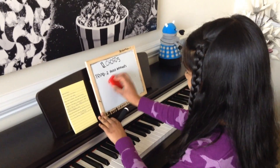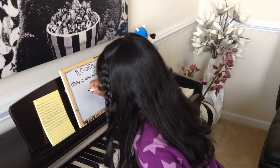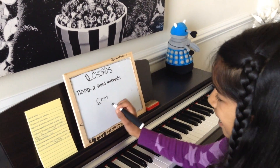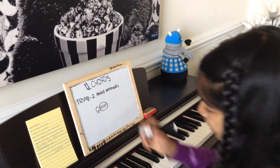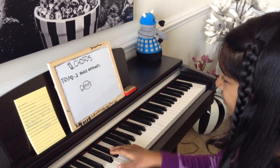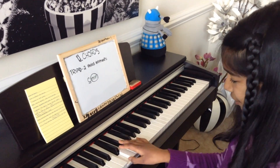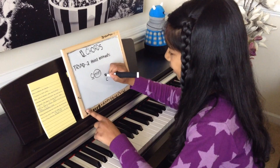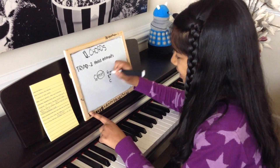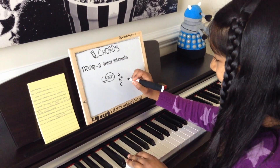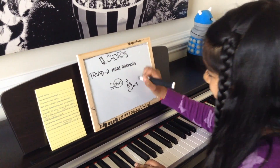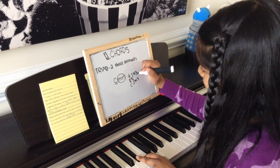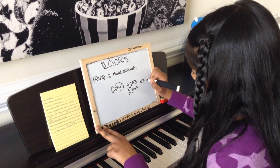Now let's move on to minor chords. Let's say you have C minor. Your note is C and your quality is minor. So you start at C, and here's your C minor chord. You have C, E flat, and G. The interval between C and E flat is a minor third, and between E flat and G it's a major third. So the formula is the opposite: minor third, major third.